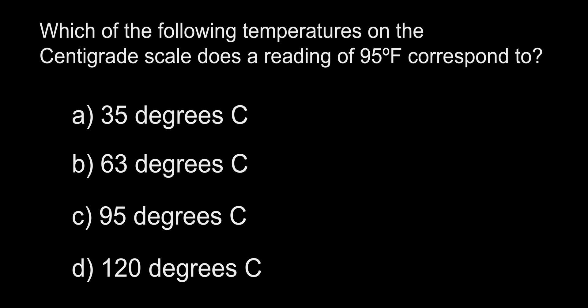Which of the following temperatures on the centigrade scale does a reading of 95 Fahrenheit correspond to? A. 35 degrees. B. 63 degrees. C. 95 degrees. D. 120 degrees Celsius.